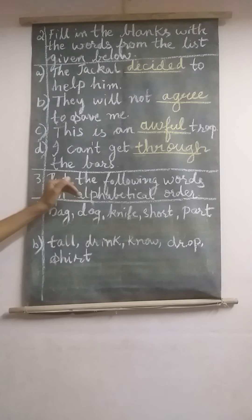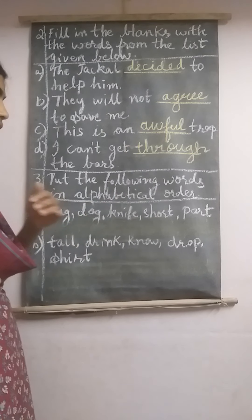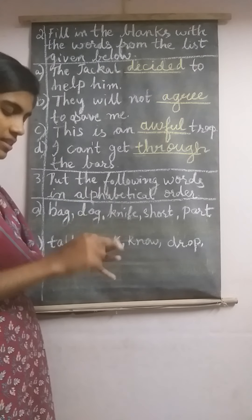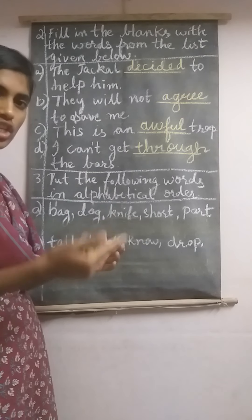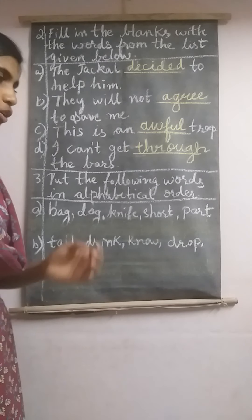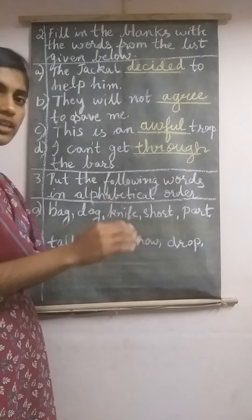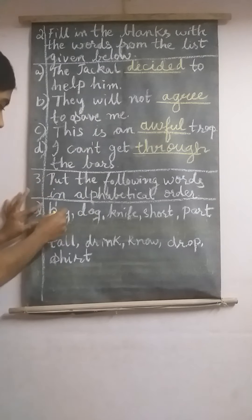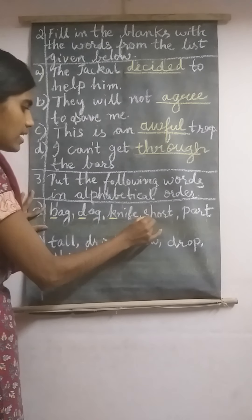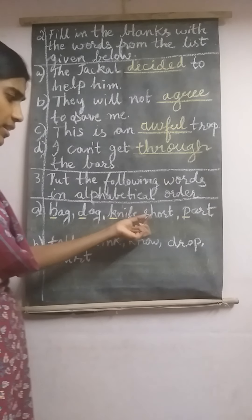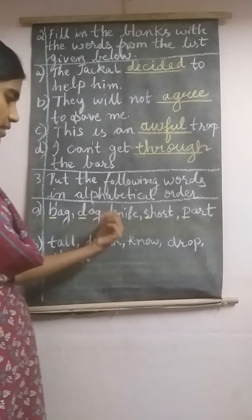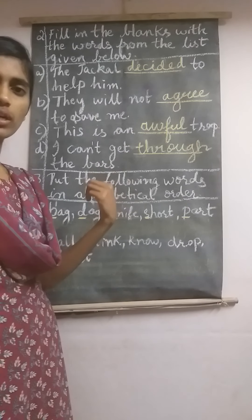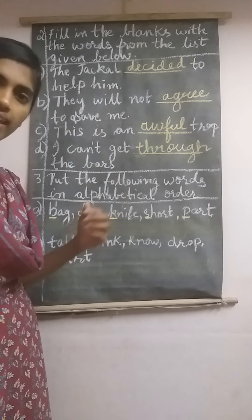Let us proceed to the next exercise: put the following words in alphabetical order. Do you know how to arrange words from A to Z? Like A, B, C, D, E, F, G, H, I, J, K, L — you know till Z. If you know this A to Z arrangement, it will be very helpful. Now listen: if the starting letters are B, D, K, S and P, you should arrange them in ascending order, like A to Z.